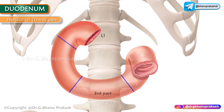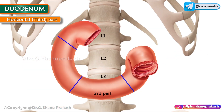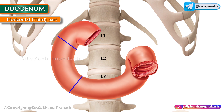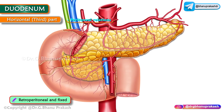The third part, or horizontal part of the duodenum, is 6 to 8 centimeters long and lies at the level of the L3 vertebra. It begins at the right side of the lower border of L3, passes horizontally, and ends by joining the fourth part of the duodenum. It is retroperitoneal and fixed; the anterior surface of the inferior part is covered with peritoneum except where it is crossed by the superior mesenteric vessels and the root of the mesentery.